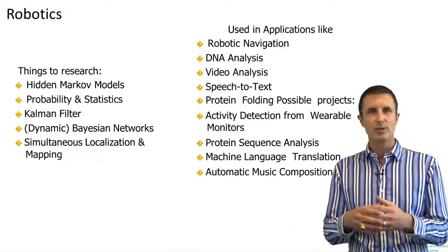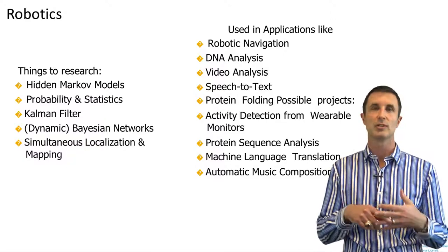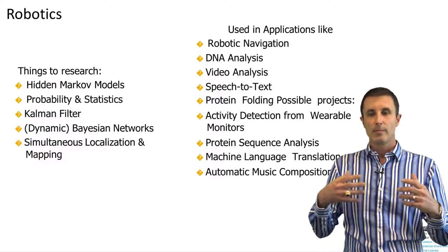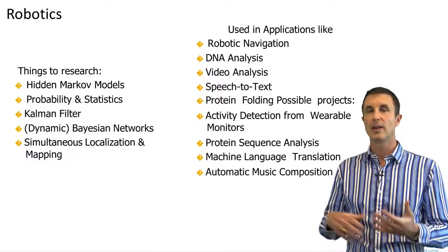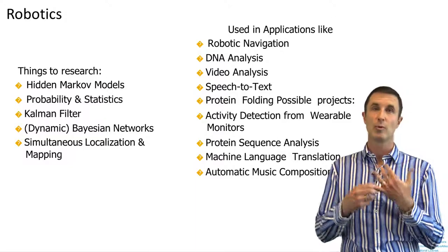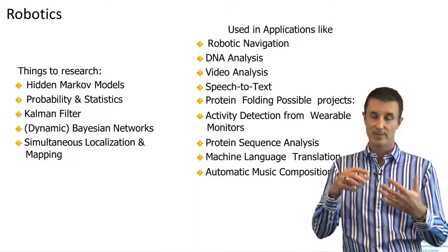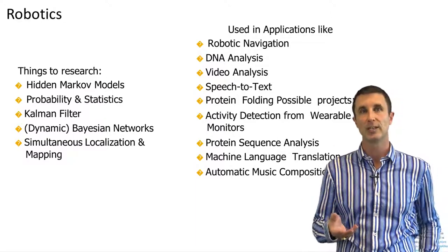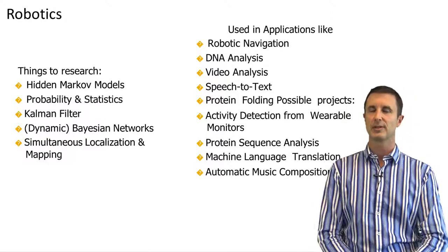The sort of models that are used here, I just described, is basically what's called a hidden Markov model. It's also used in genomics, and it's used in speech recognition and a wide variety of other things. Most of robotics and a lot of AI now deals with probability and statistics. Another example of what I just showed would be the Kalman filter, if you're familiar with control theory. These things are used in robot navigation and DNA analysis, as I said, for hidden Markov models, video analysis, speech to text, protein folding, all these sorts of things rely on that kind of analysis there through probabilistic methods.